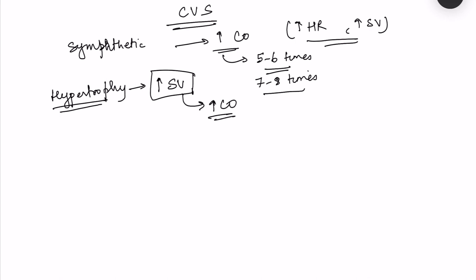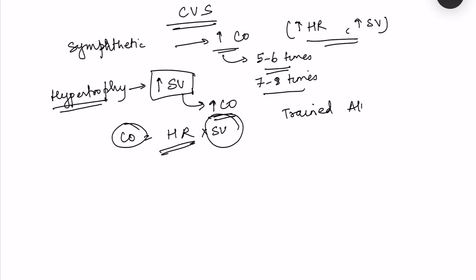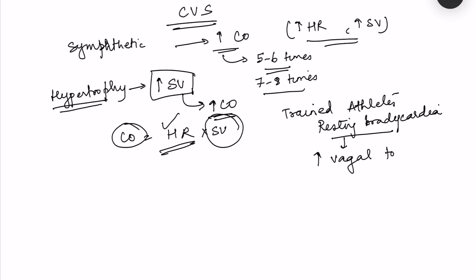At rest, an increased stroke volume would cause unnecessary increase in cardiac output. Since cardiac output equals heart rate times stroke volume, if the muscle mass generates greater stroke volume, the heart rate can decrease so that resting cardiac output remains normal. That is why trained athletes have resting bradycardia — the increase in cardiac output raises blood pressure, the baroreflex activates the parasympathetic system, decreasing heart rate. This is due to increased vagal tone.